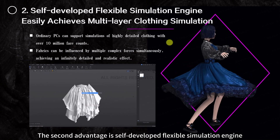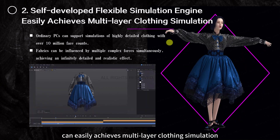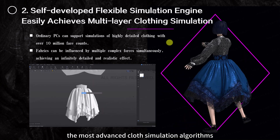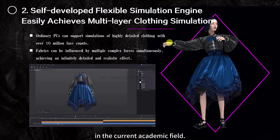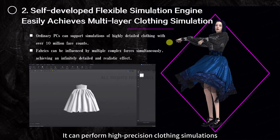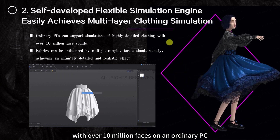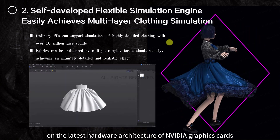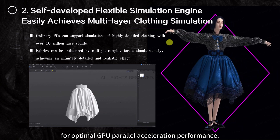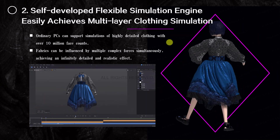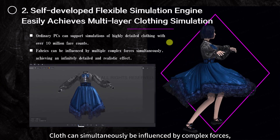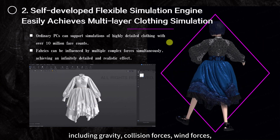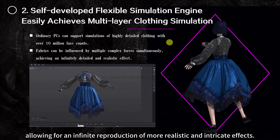The second advantage is a self-developed flexible simulation engine that can easily achieve multi-layer clothing simulation. Style3D's cloth simulator is supported by the most advanced cloth simulation algorithms in the current academic field. It can perform high-precision clothing simulations with over 10 million faces on an ordinary PC. The algorithm runs on the latest hardware architecture of NVIDIA graphics cards for optimal GPU parallel acceleration performance. Cloth can simultaneously be influenced by complex forces including gravity, collision forces, and wind forces, allowing for infinite reproduction of more realistic and intricate effects.